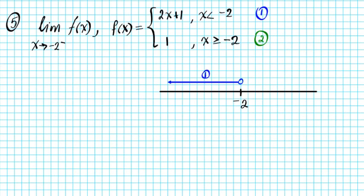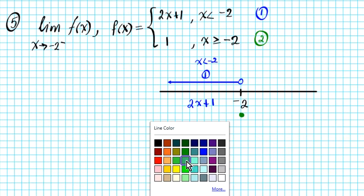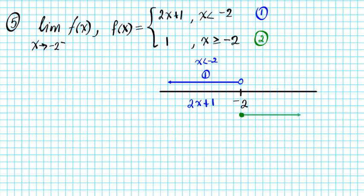For x less than negative two, the active function is 2x plus one. On the other side, greater than or equal to negative two uses a closed circle, so at the point or anything to the right, function two is active. That's region two, where x is greater than or equal to negative two, and the active function value is one.